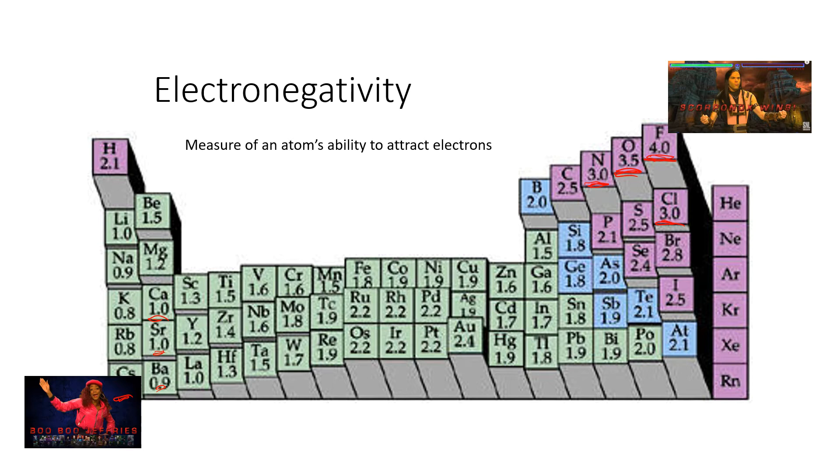Down here you have very low numbers and metals. These are the elements that will give up no fight and give an electron up real quick. So this is like Boo Boo Jeffries who doesn't like fighting, and here is like the Scorpinox. We saw that video where they do like fighting.